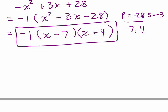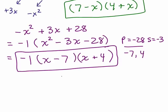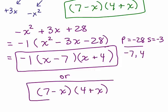Now, contrast that with the answer I wrote up here, which was 7 - x times 4 + x. Why are those the same? Well, because if you do the negative 1 times x - 7, you'll get negative x + 7, which is the same as 7 - x. And x + 4 can be written as 4 + x. So both are fine. That's it.